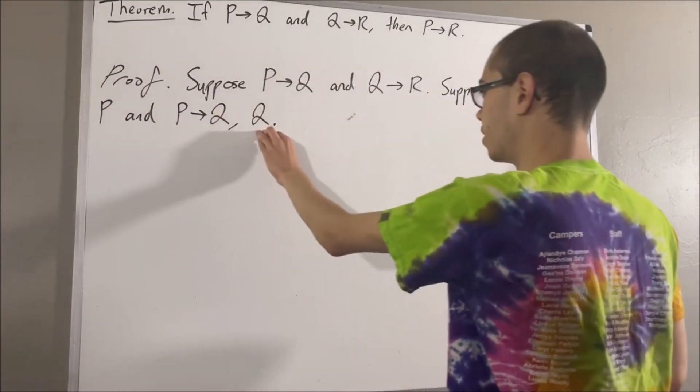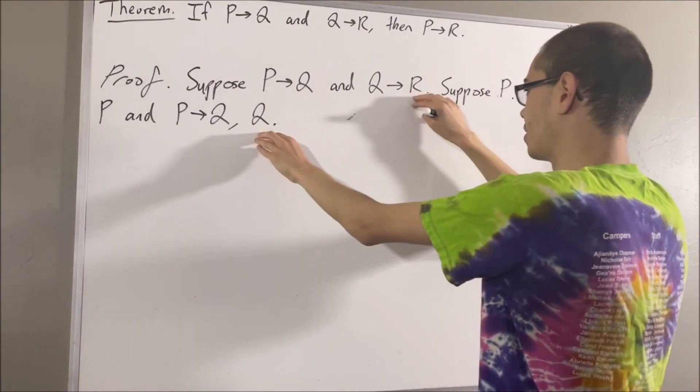But then, since Q and Q implies R, these two facts tell us that R must then be true.